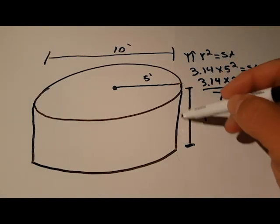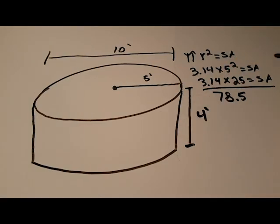Now we're going to multiply by the height of the pool so we can get volume. That's 4 feet, so we're going to multiply by 4, and that equals 314 square feet.